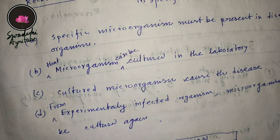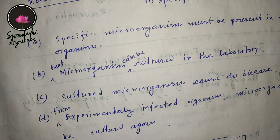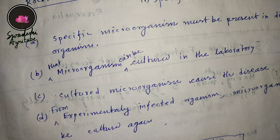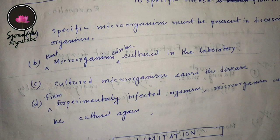The fourth postulate states that from the experimentally infected organism, the microorganism can be cultured again. You have put the microorganism into a healthy person, who then becomes diseased. Now take the microorganism from that person's body, come back to your laboratory, and try to culture them again.